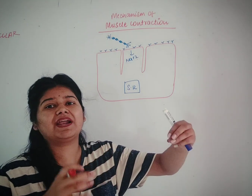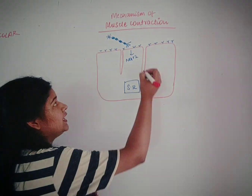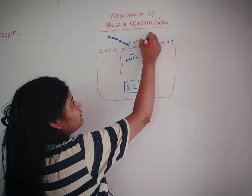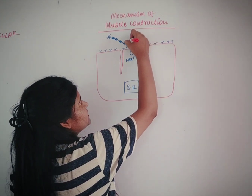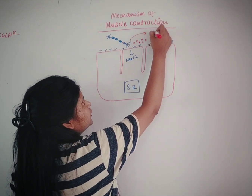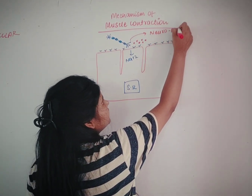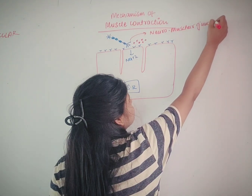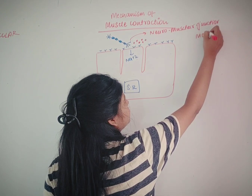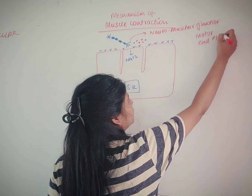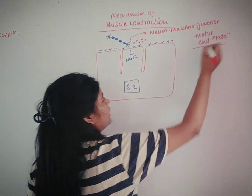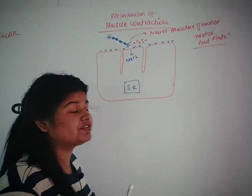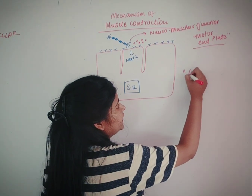The motor neuron emits a neurotransmitter from the nerve ending. The junction between the nerve ending and the muscle is called the neuromuscular junction, also called the motor end plate. So this is the junction between the muscle and the motor neuron.